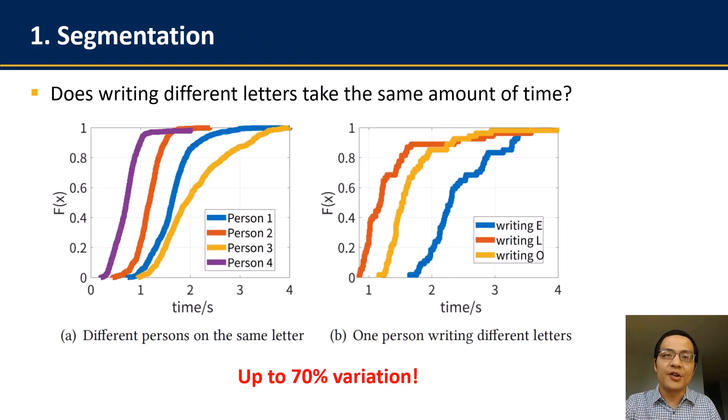So over here, the first step is to segment the continuous magnetometer readings into segments. And the most intuitive question we're going to first ask here is, does writing any different English words and letters take the same amount of time? If so, then the simplest method of segmentation will be directly using such duration of writing to decide each segment. However, our preliminary experiments over four student volunteers shows that no matter whether different people write the same letter, or the same person write different letters, the duration of writing one letter is always highly heterogeneous, and such a variation of writing duration could be up to 70%. In this case, we will have to find out some other characteristics from human handwriting patterns for segmentation.